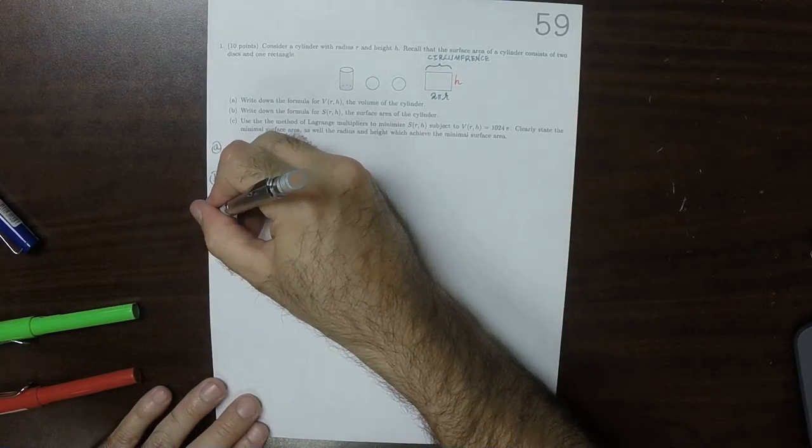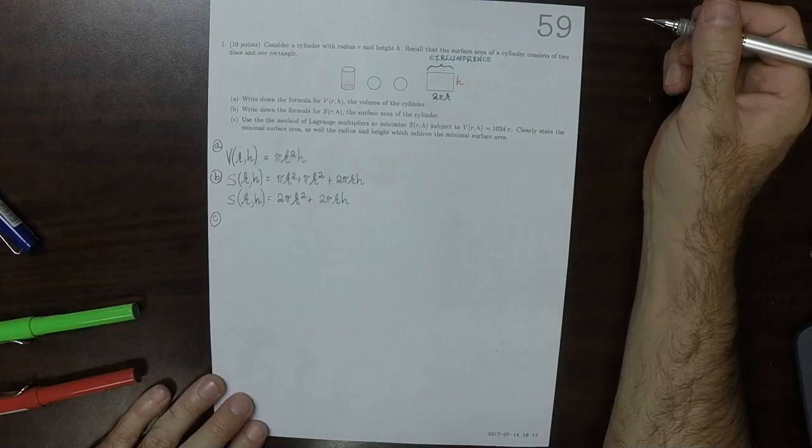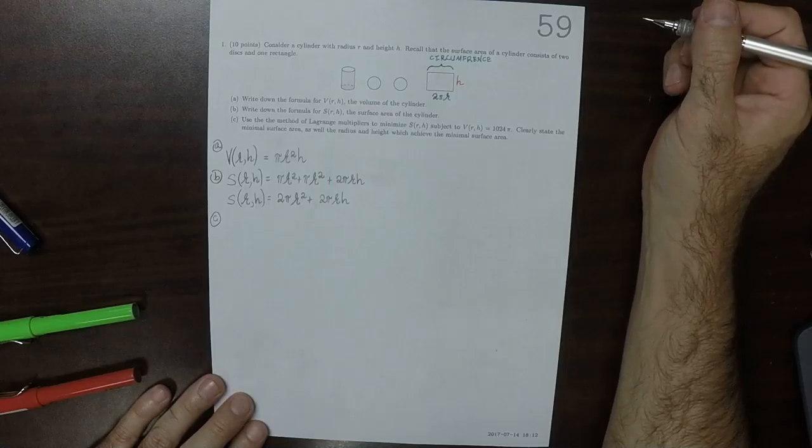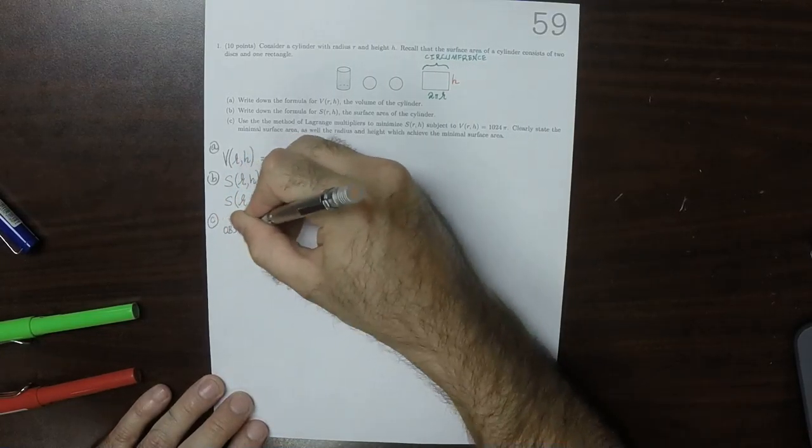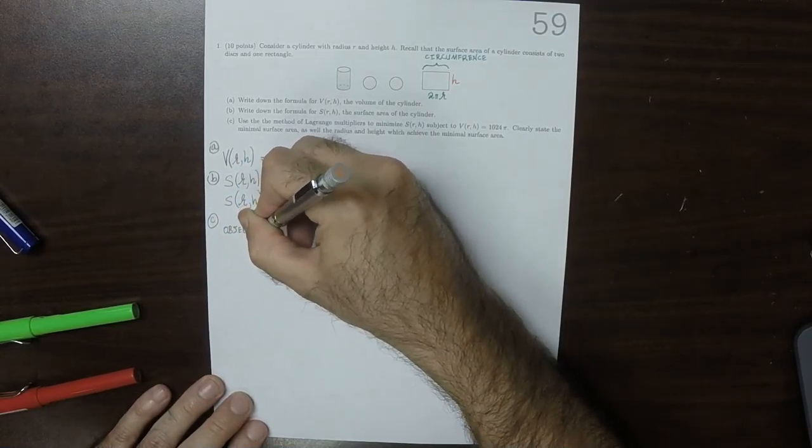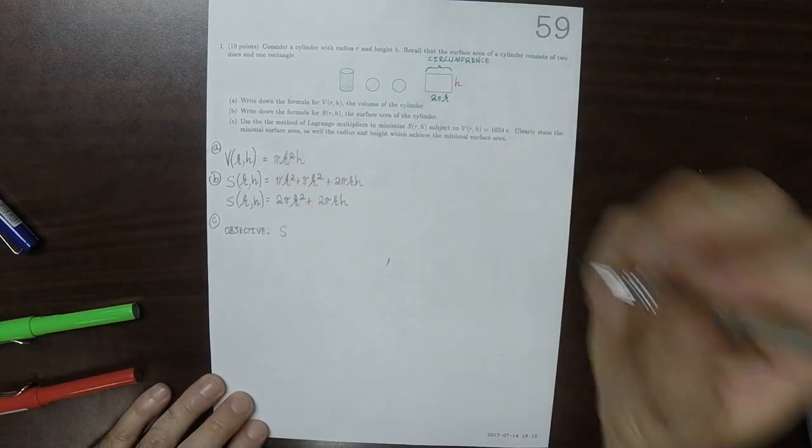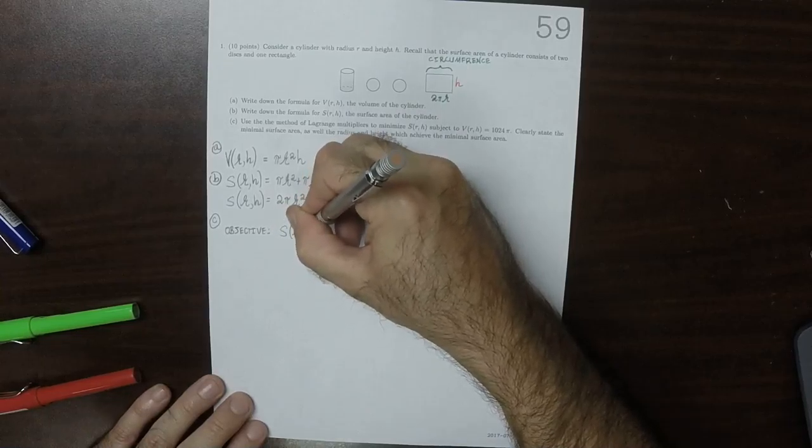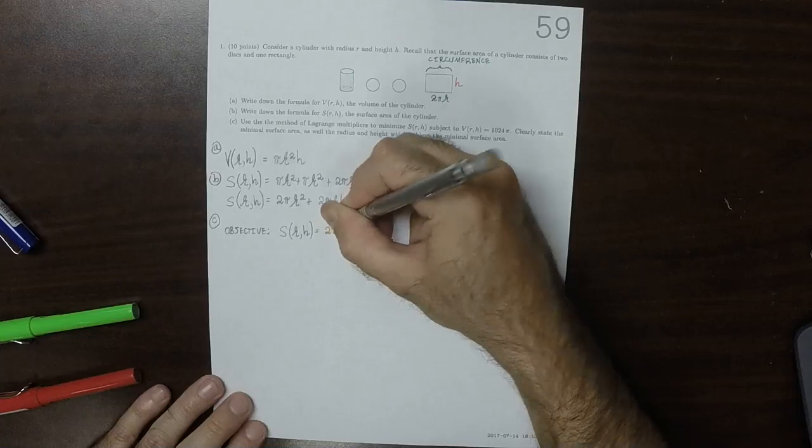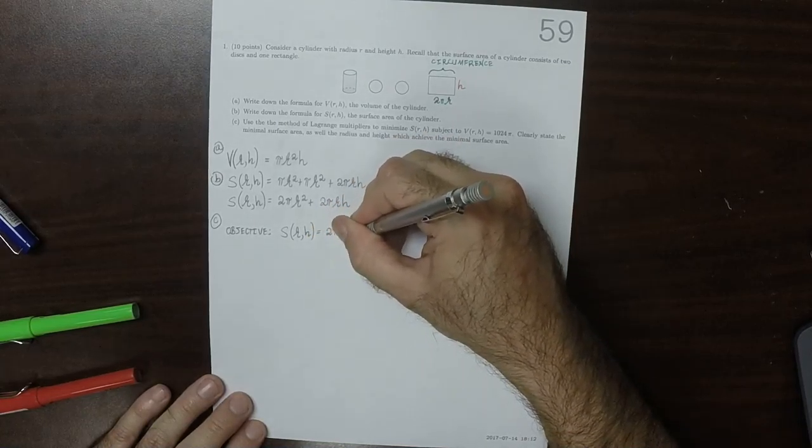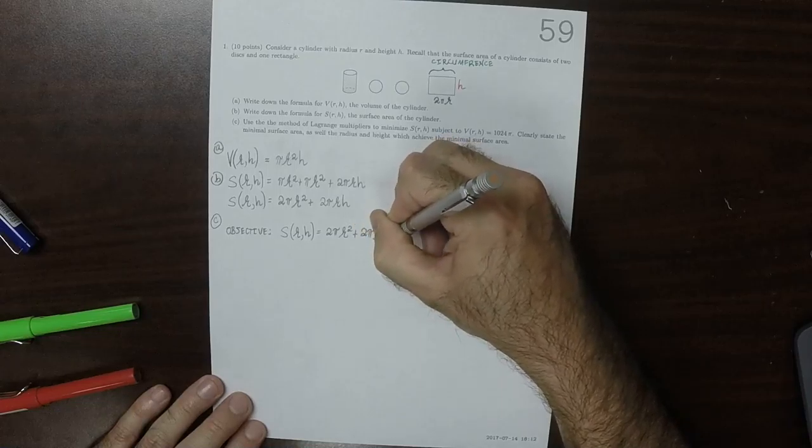Okay, then for part C, minimize the surface area. So the objective function is the surface area. So S of r and h is this thing here, 2 pi r squared plus 2 pi r h.